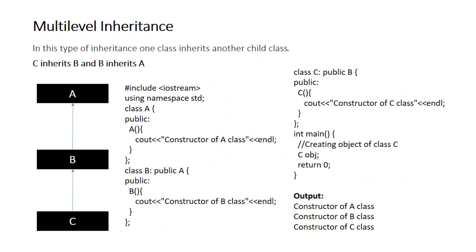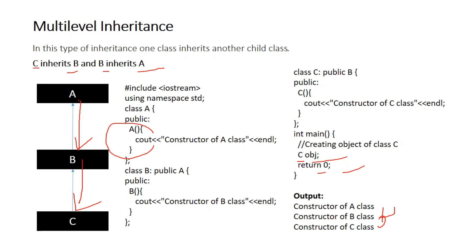In single inheritance, one class inherits another class — one child class. The output will show Constructor A, Constructor B, and Constructor C. Constructor B is inherited, and then we call Constructor B; while inheriting, we then call the constructor.